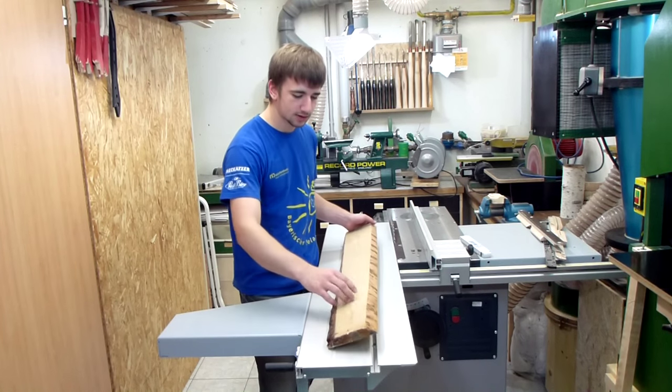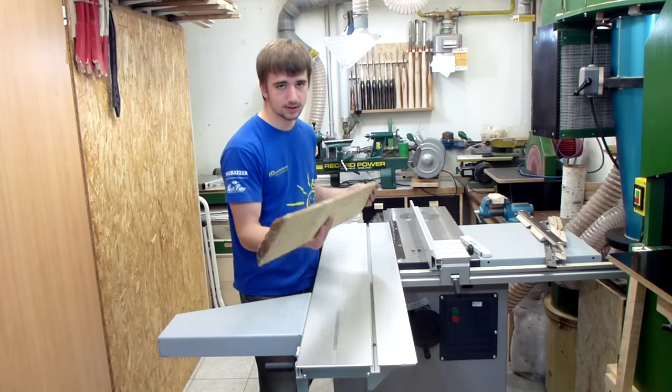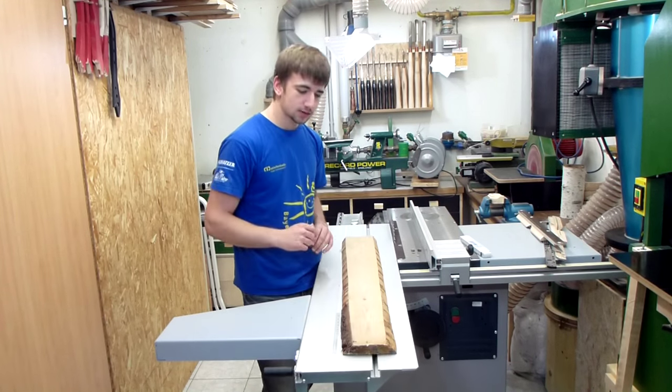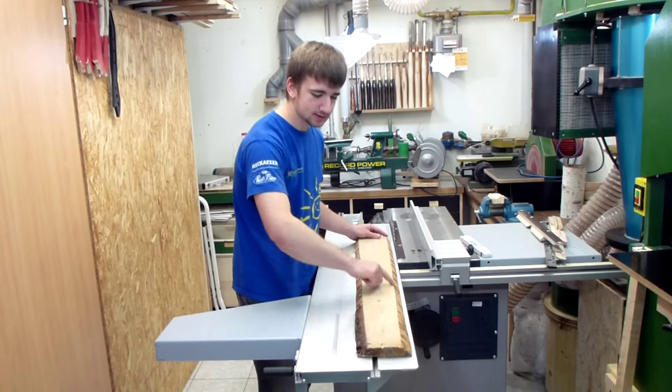Face jointing would be no problem at all, but edge jointing would be because you have to pass this edge like a million times over the jointer until it's straight. So what you do first is to make a trim cut to get a nice and straight roughen edge.